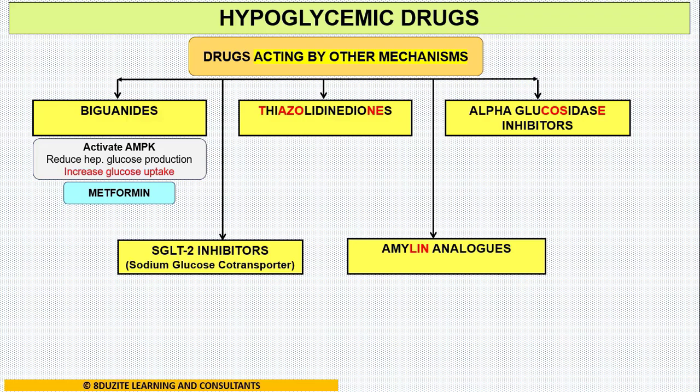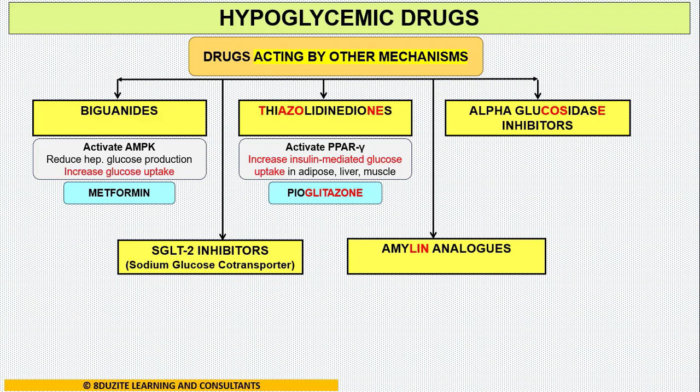Moving on to thiazolidinediones. These drugs activate the nuclear receptor PPAR-gamma and increase insulin-mediated glucose uptake in liver, muscle, and adipose tissue. We have two drugs: pioglitazone and rosiglitazone. If you check the red letter words — A-Z-O and N-E — combined, it becomes azone. So both these drugs are azones.